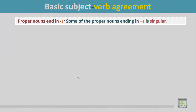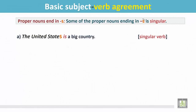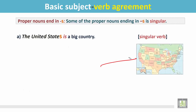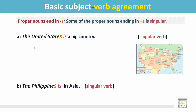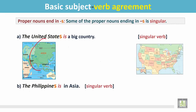Some proper nouns ending in S are singular. Though the noun adds S, it carries a singular meaning. Example: 'The United States is a big country.' Looking at the map of the United States — it is a big country. The proper noun 'United States' ends in S, but it is a singular noun, so the verb is singular. Another example: 'The Philippines is in Asia.' We see the map of Asia and the Philippines is in Asia. This proper noun has S at the end but is singular, so the verb is singular.